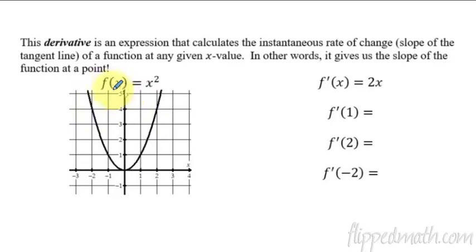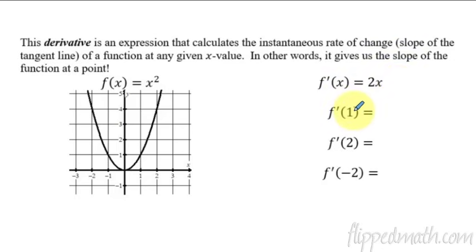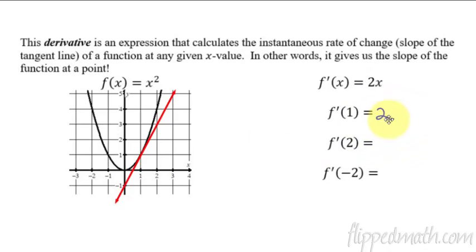Let me show you what I mean. Here we have f(x) = x², a simple parabola with a minimum at the origin (0, 0). Its derivative is represented by 2x. Don't worry about how I got that — we'll talk about that in just a minute. So if the derivative is 2x and we plug in 1, we get 2 times 1, which is 2. So at x = 1, the tangent line has a slope of 2.